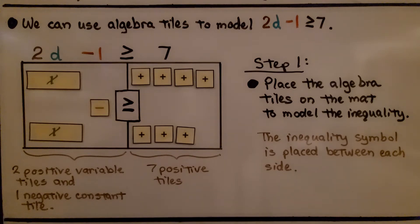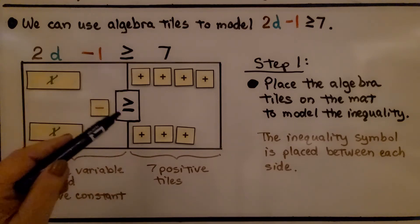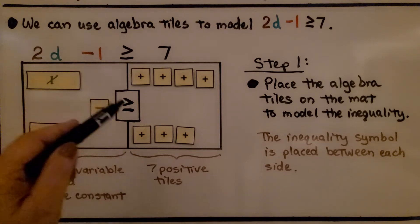We place the algebra tiles on the mat to model the inequality. We have two positive variable tiles and a negative constant tile, and we have seven positive tiles. The inequality symbol is placed between each side.